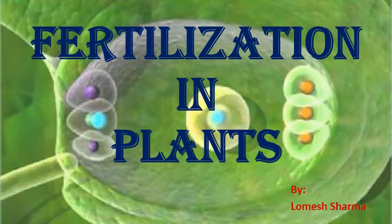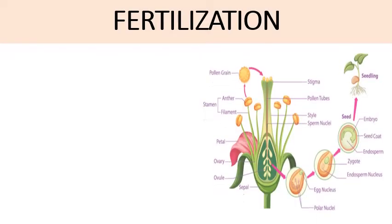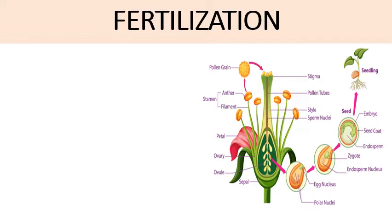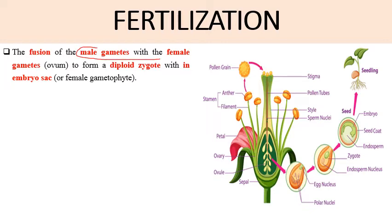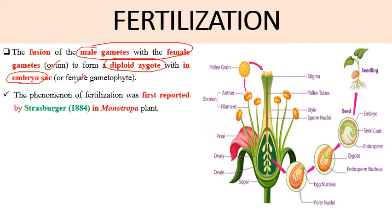Hello everyone, welcome back. Today I am here with another chapter of plant embryology - that is fertilization in plants. Fertilization is an act of sexual reproduction which involves fusion of male and female gametes to form a diploid zygote inside the embryo sac. This phenomenon of fertilization was first reported by Strasburger in 1884 in the plant Monotropa.